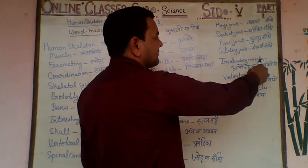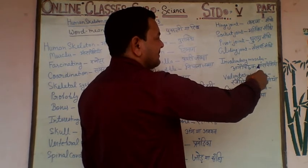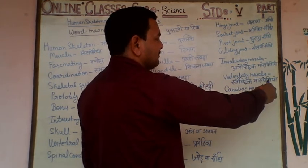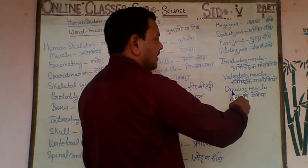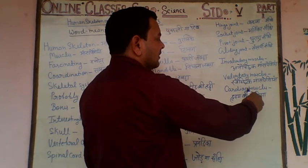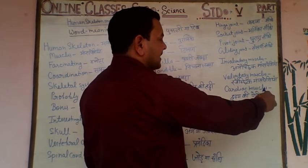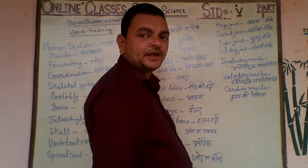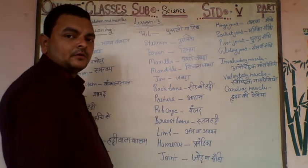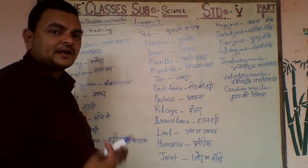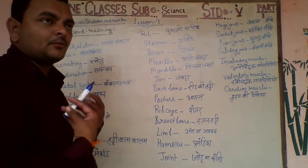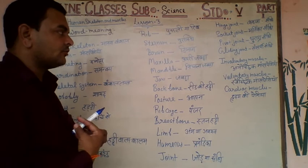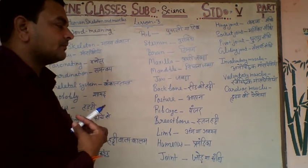Involuntary muscles is Unactive Manspecia. Voluntary muscles is Suicic Manspecia. Cardiac muscles — M Echm — Cardiac muscles.